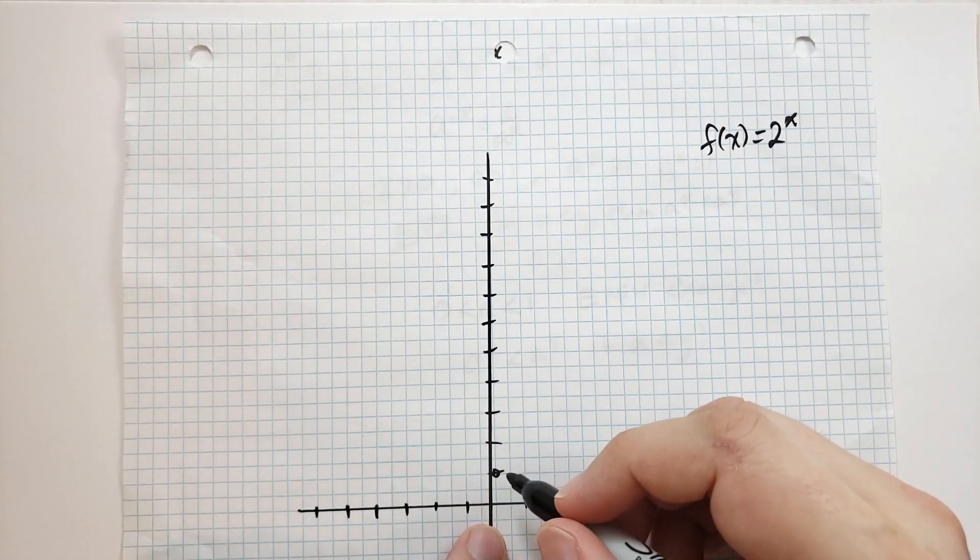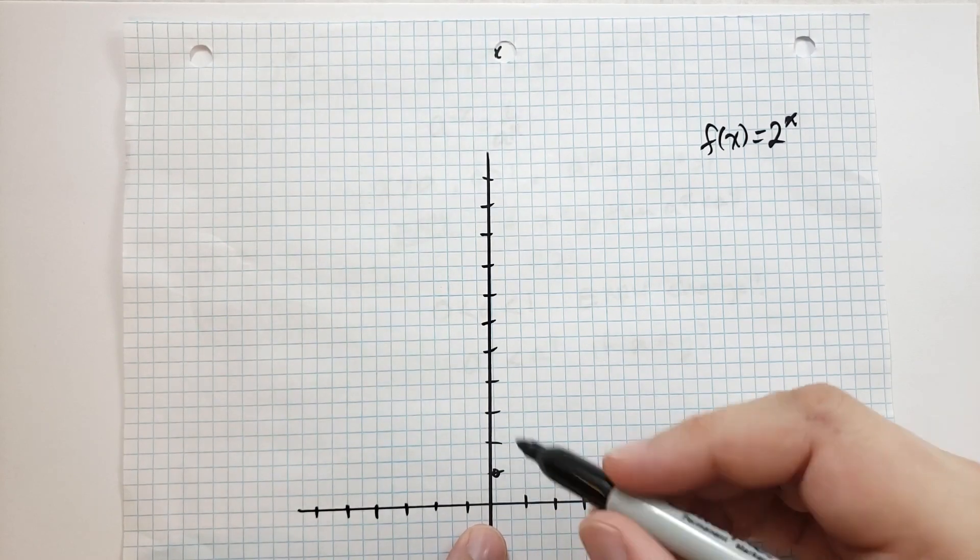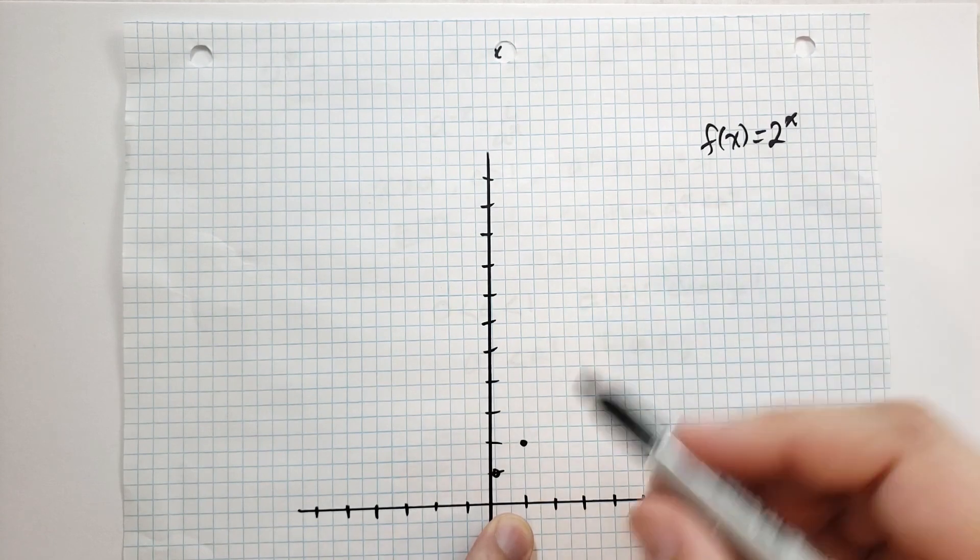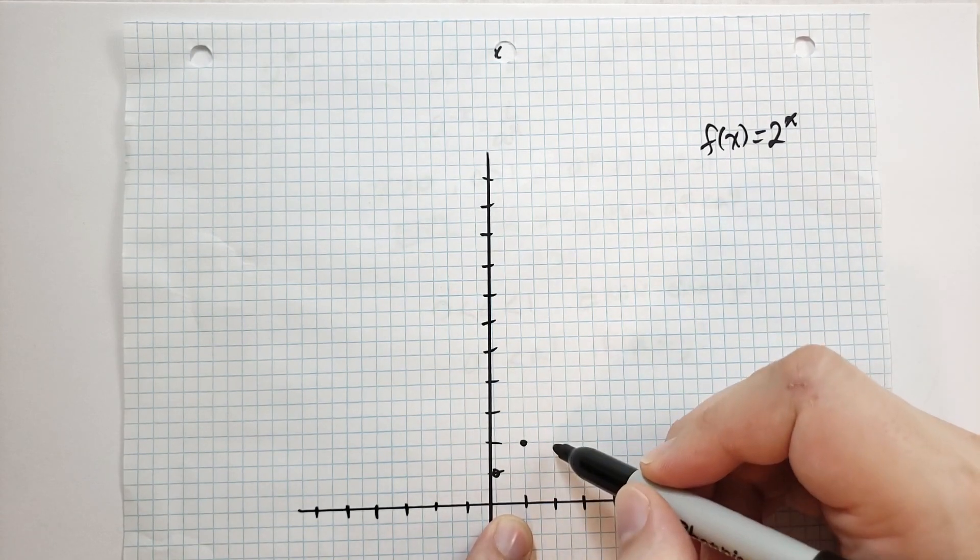So we're going to say a is equal to 2. So f(x) equals 2^x. Let's mark these off. I didn't draw the vertical coordinate quite right, but it'll still work. At 0, the value is 1 because a^0 is 1. At 1, the value is 2. At 2, well, that's 2 squared, so that's 4.